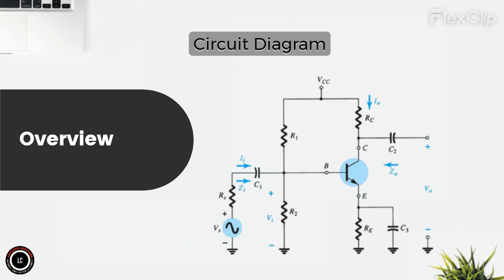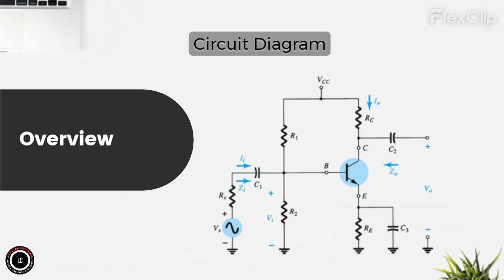Output stage — collector resistor RC: the collector resistor acts as a load for the transistor; the amplified output signal appears across this resistor. Coupling capacitors C1 and C2: C1 is the input coupling capacitor — it blocks the DC bias from the input signal, allowing only the AC signal to pass into the amplifier, preventing any DC offset from interfering with operation. C2 is the output coupling capacitor — similar to C1, it blocks the DC component from the output, allowing only the amplified AC signal to be passed to the next stage of the circuit.